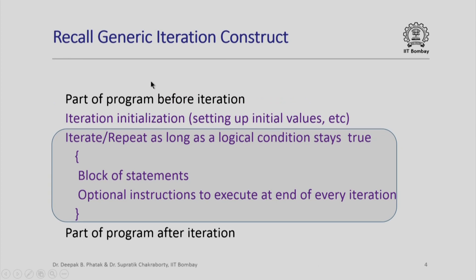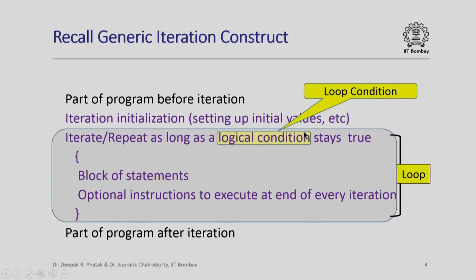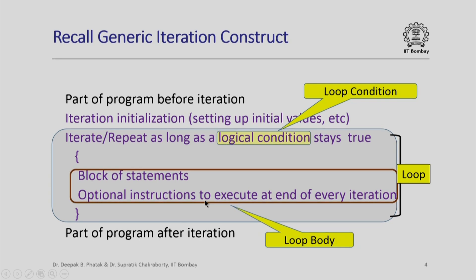Recall this generic iteration construct from a previous lecture. In general we have a part of the program executed before the iteration, then some initialization which is iteration specific, and then the actual iteration happens where we repeat as long as a logical condition stays true. We iterate over a block of statements, with some additional instructions executed at the end of every iteration. This logical condition is called a loop condition, and the block of statements along with those end-of-iteration instructions is called the loop body.